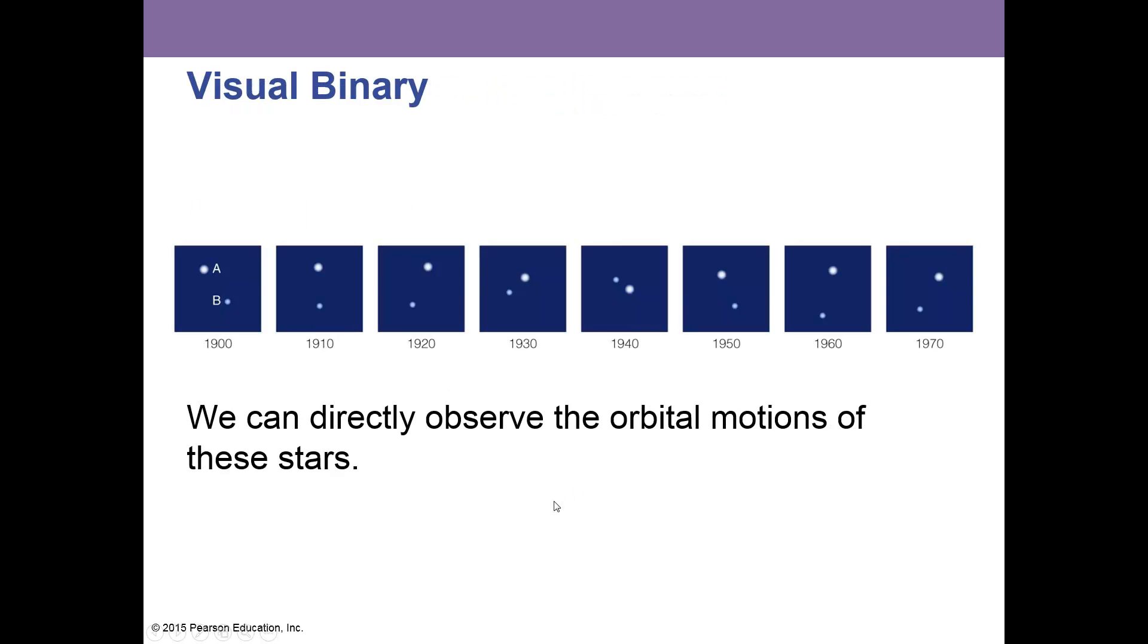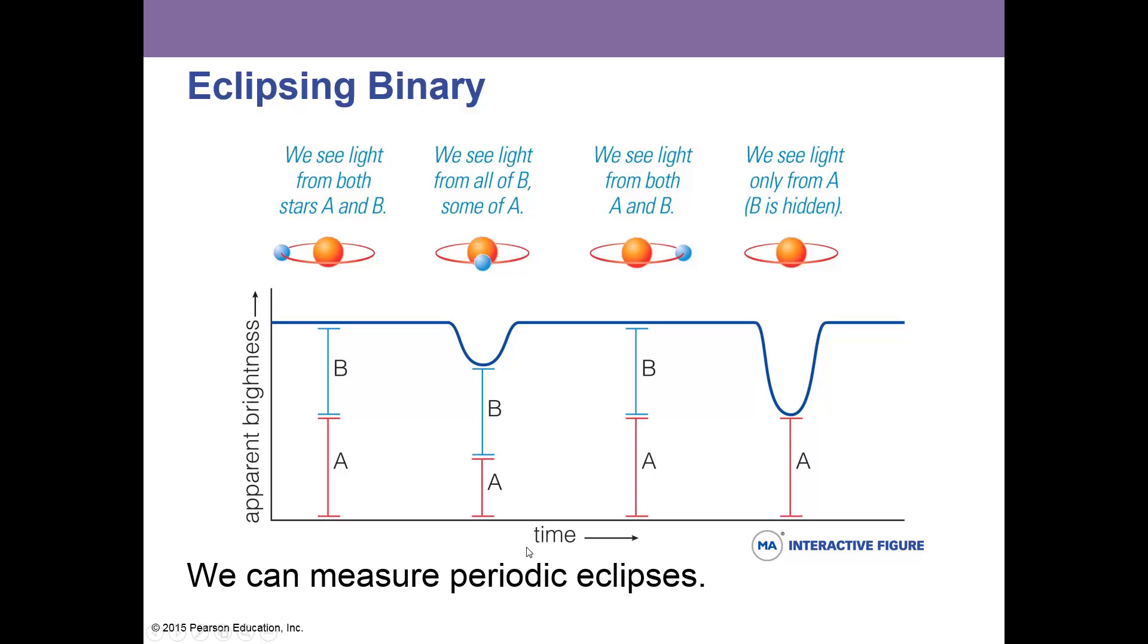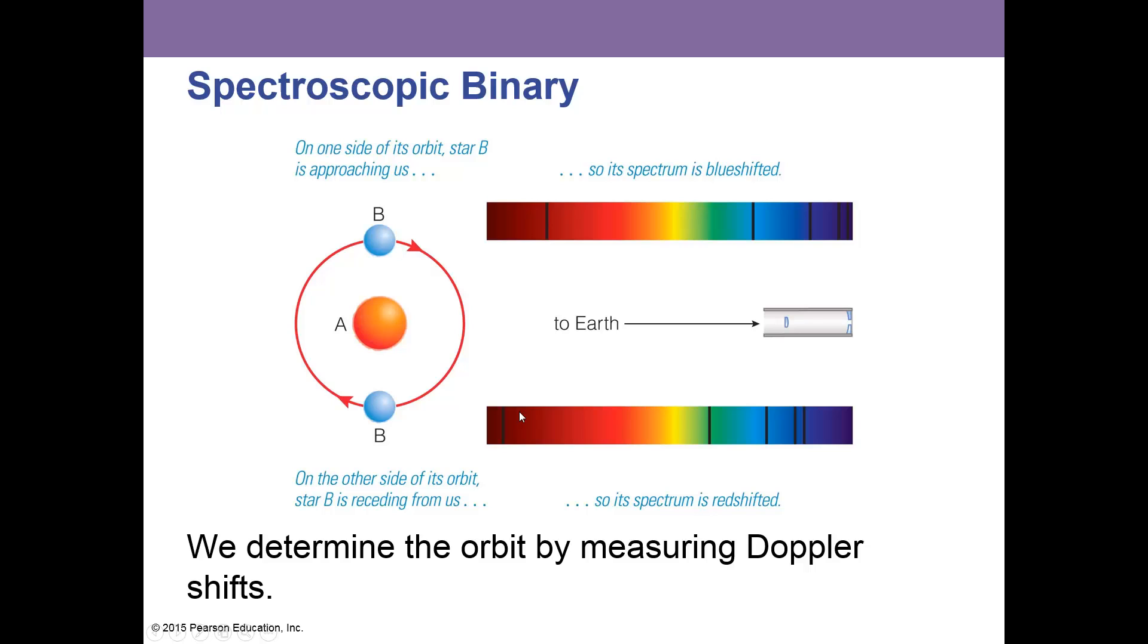Here's a visual binary—we can see the two stars orbiting each other over time. The eclipsing binary is when we measure periodic eclipses, like I told you about before, and this is my research. The spectroscopic binary is where the two stars are so close we have to use a spectrum to resolve them when we see the differences in the lines.